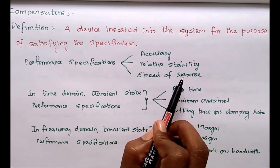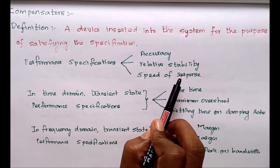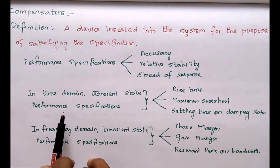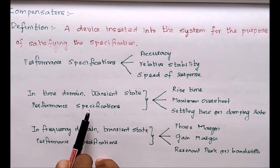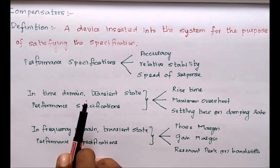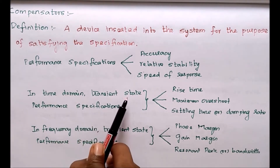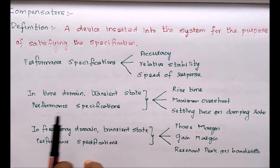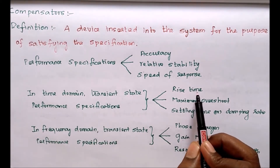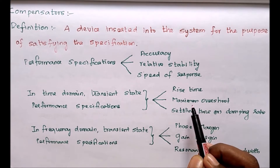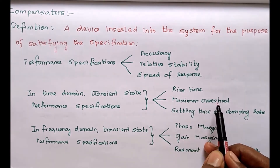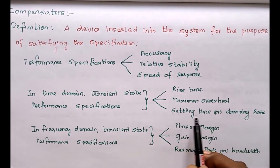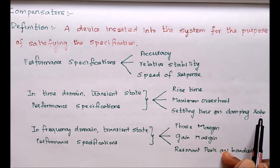So these three are the basic performance specifications. If your system is in the time domain, the transient state performance specifications are rise time, maximum peak overshoot, settling time, or damping ratio.